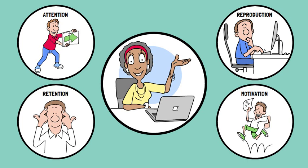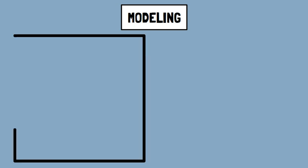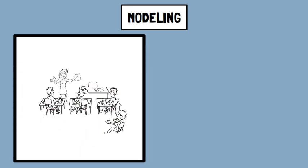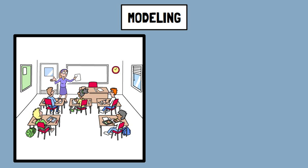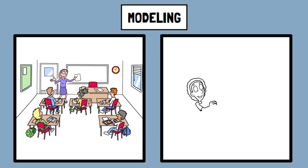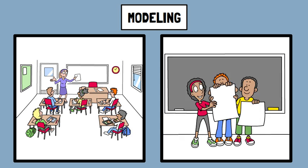Three key concepts influence observational learning which are modeling, imitation, and reinforcement. Modeling refers to the demonstration of a behavior by a role model or someone in authority. The behavior of the model can influence the observer's likelihood of imitating that behavior. Positive modeling often leads to positive observational learning outcomes.